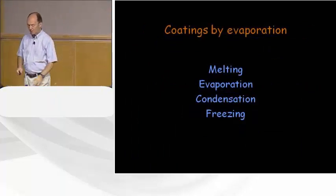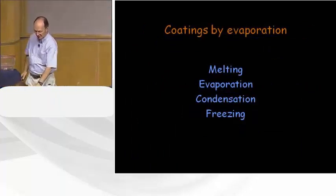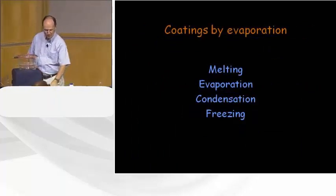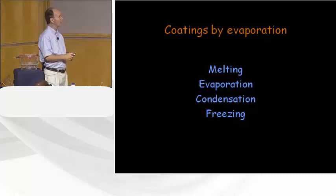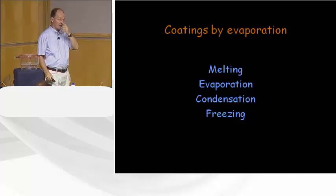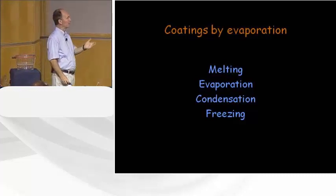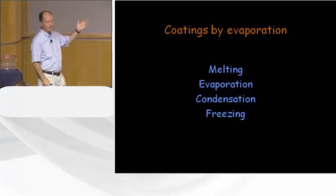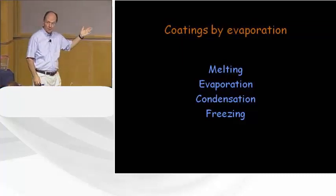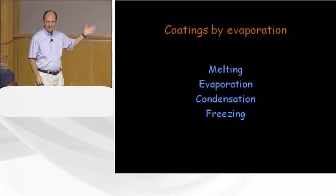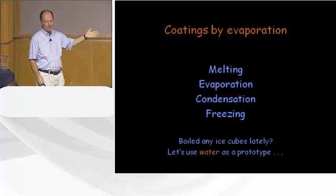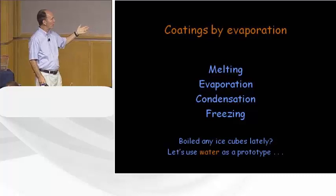One of the major ways of making coatings is by evaporation, which consists of a four-step process: melting, evaporation, condensation, and freezing — we'll talk about all of those.